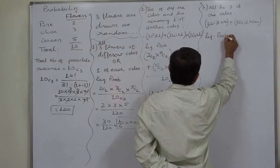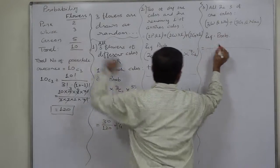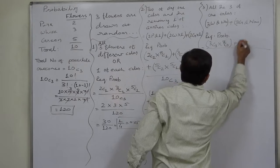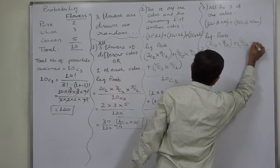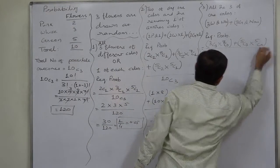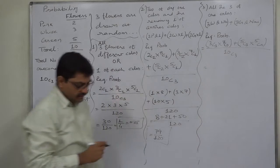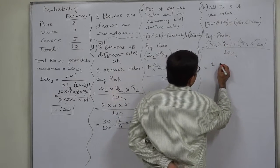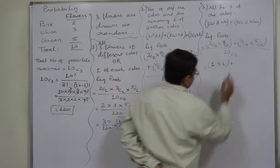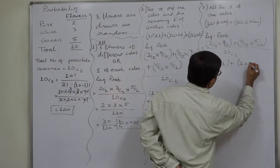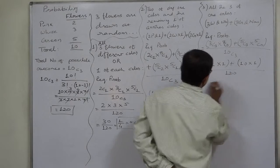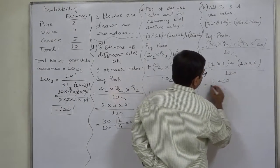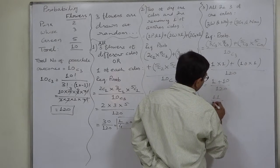The required probability: three white out of three in 3C3 ways and none out of remaining seven in 7C0 ways, or three green out of five in 5C3 ways and none out of remaining five in 5C0 ways, upon 10C3. 3C3=1, 7C0=1, 5C3=10, 5C0=1. So: (1×1) + (10×1) = 11, divided by 120. The probability is 11/120.